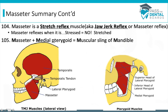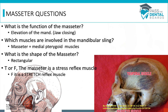Let's focus on some questions you may see on the masseter. What is the function of the masseter? Elevation of the mandible, also known as closing the mouth. Which muscles are involved in the mandibular sling? The masseter and the medial pterygoid. What is the shape of the masseter? Rectangular. True or false: the masseter is a stress reflex muscle. It's not a stress reflex muscle — it's a stretch reflex muscle. They throw in that stress word to confuse you.